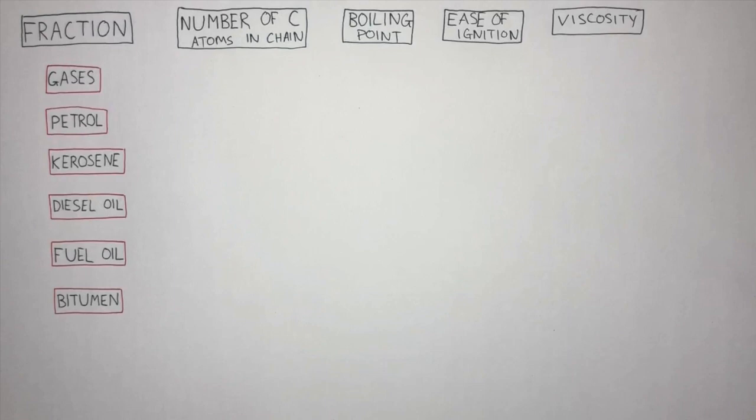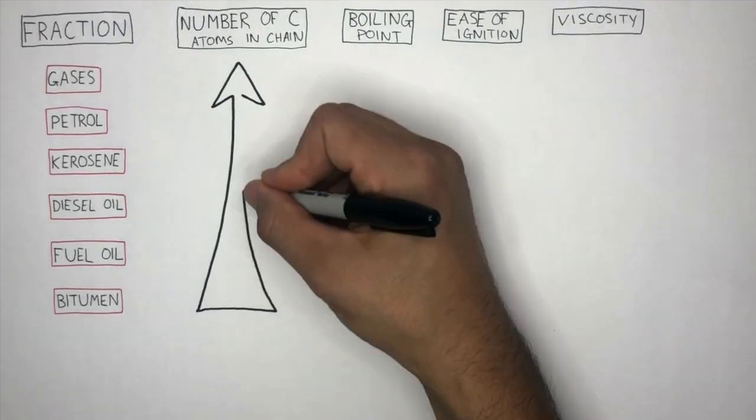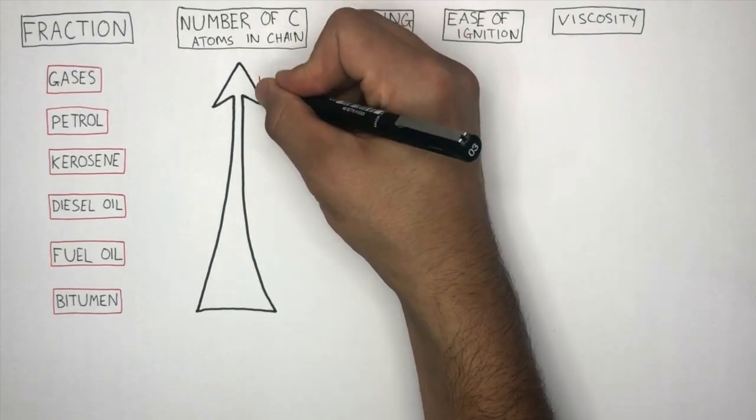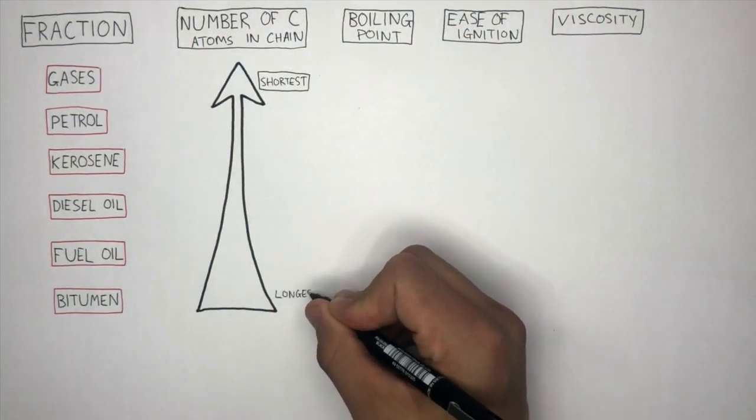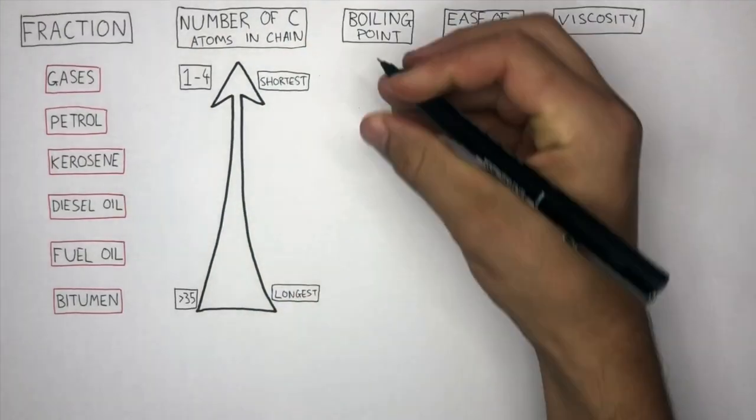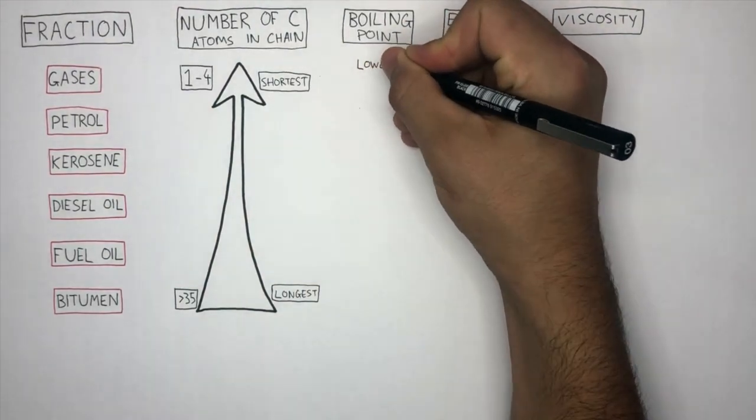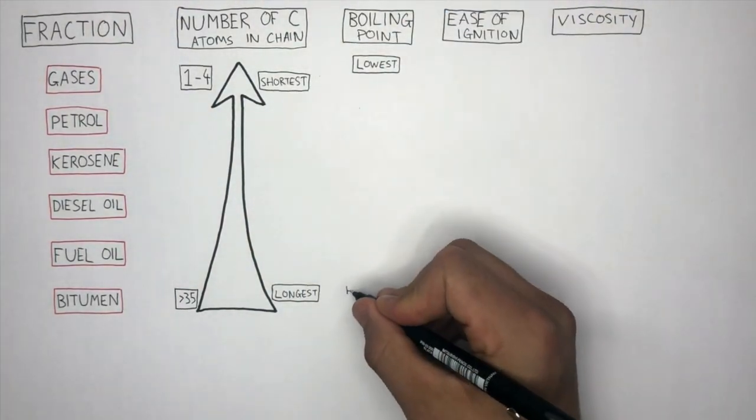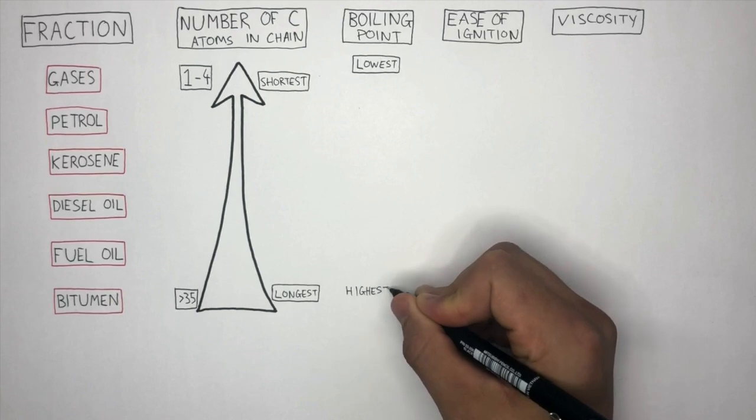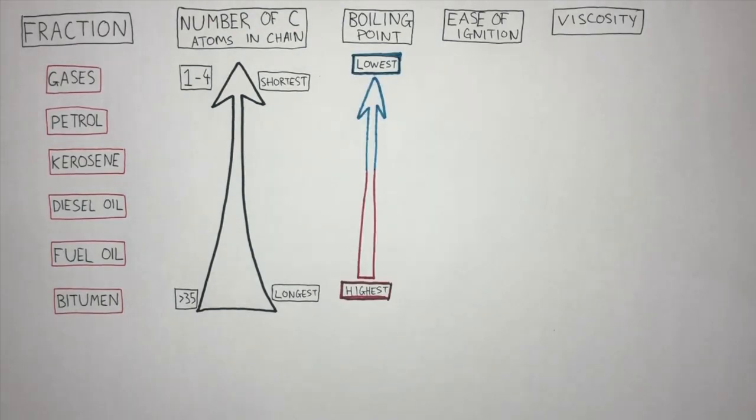We will now look at the trends in the properties of the different fractions in a little bit more detail. The shortest hydrocarbons are at the top, whereas the longest hydrocarbons are at the bottom. Gases have the lowest boiling point, whereas bitumen has the highest boiling point. This is because the boiling point increases as the length of the hydrocarbon chain increases.